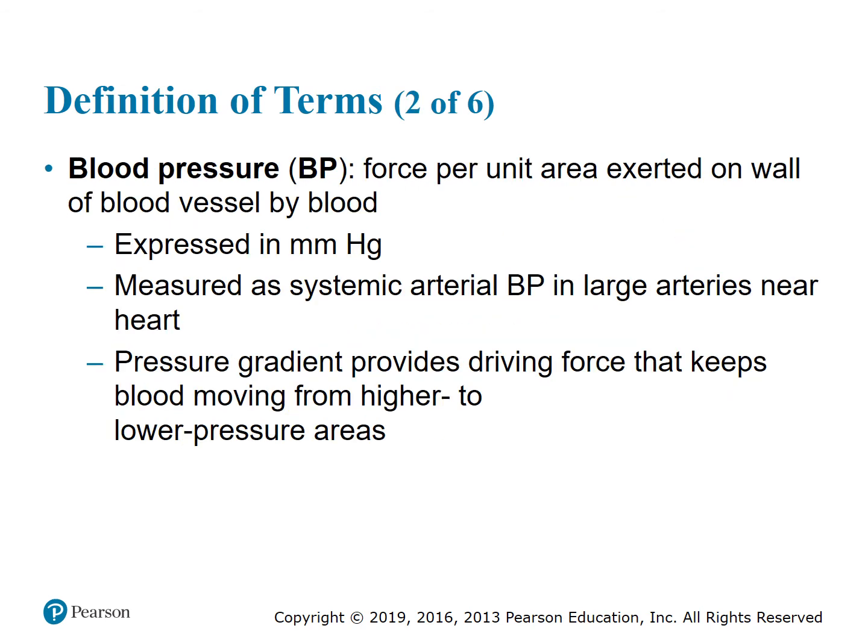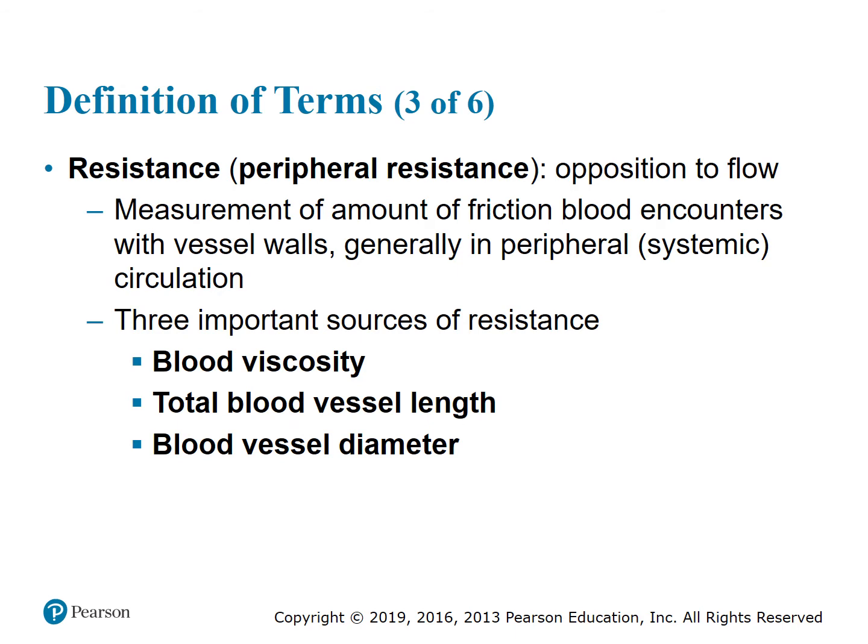Blood pressure is the force per unit area exerted on the wall of a blood vessel by the blood, expressed in millimeters of mercury. Measured as systemic arterial blood pressure in large arteries near the heart, the pressure gradient provides the driving force keeping blood moving from higher to lower pressure areas. Resistance — referred to as peripheral resistance — is opposition to flow, measuring friction the blood encounters with vessel walls. There are three important sources of resistance: blood viscosity, total blood vessel length, and blood vessel diameter.